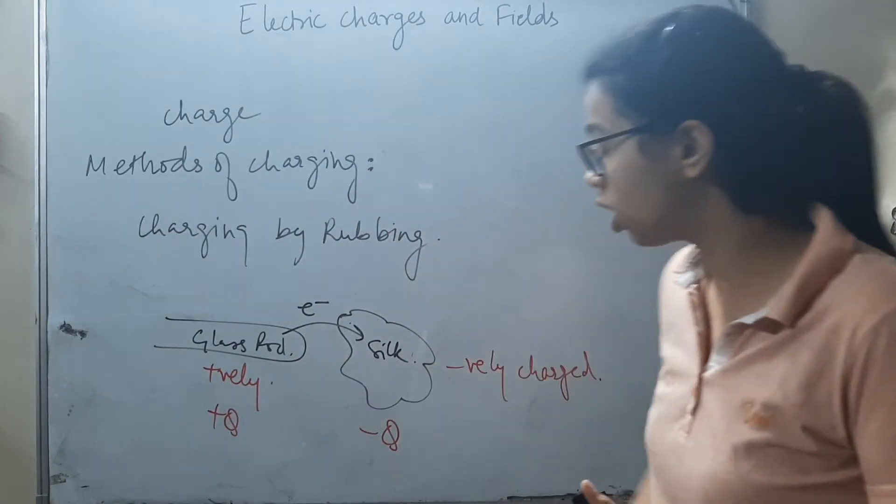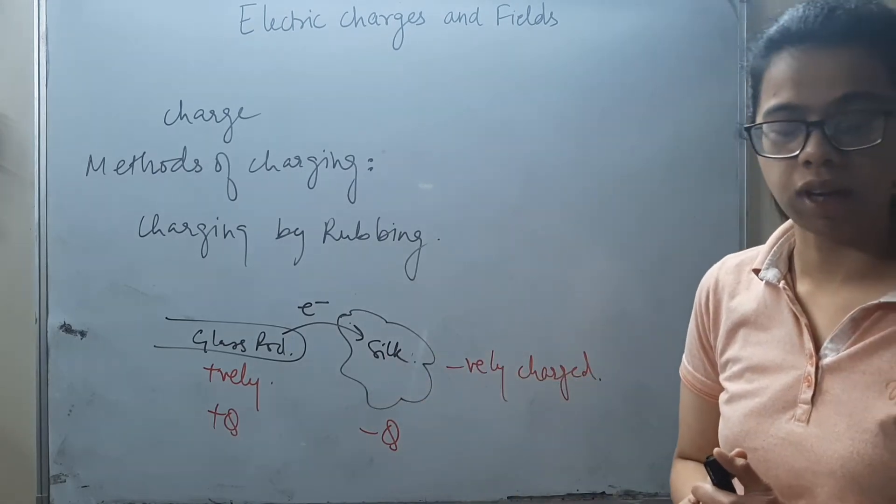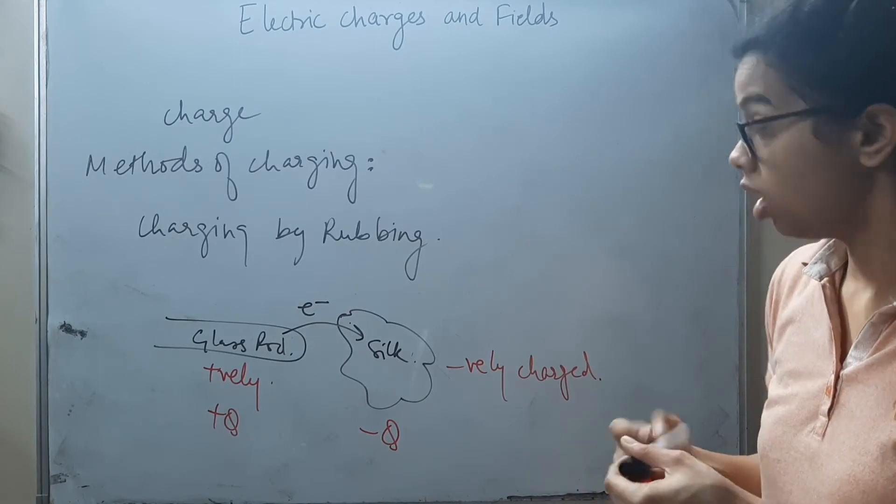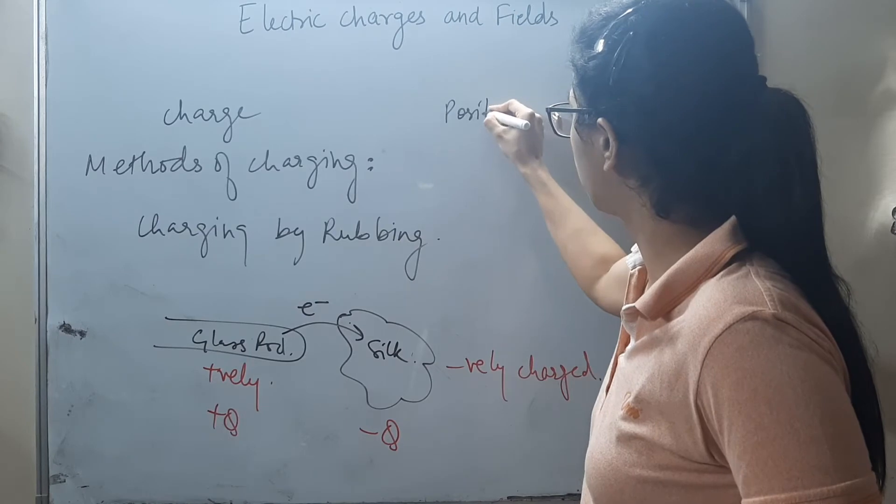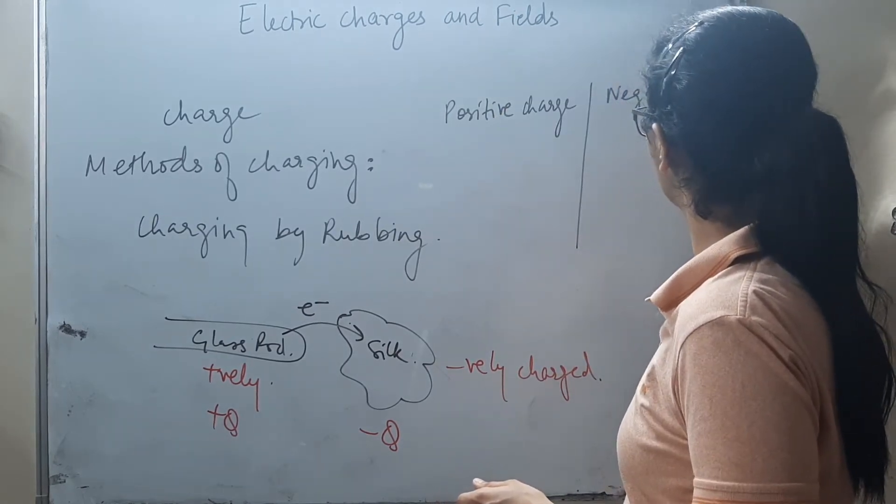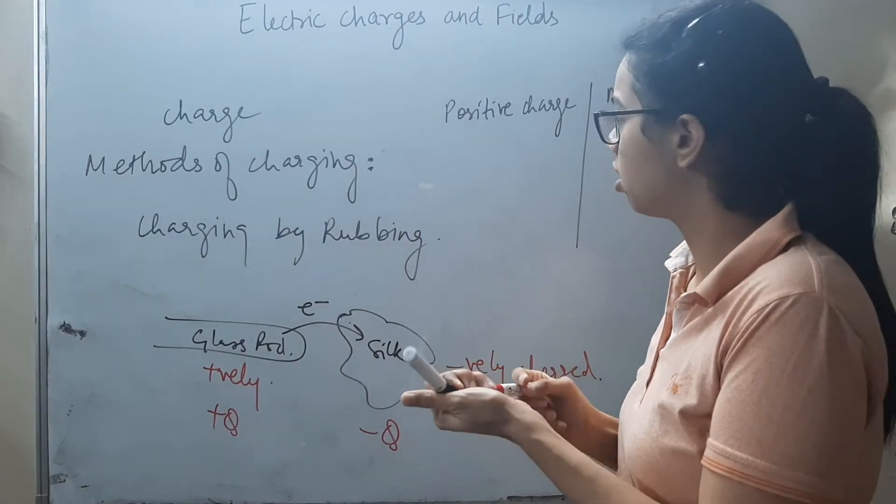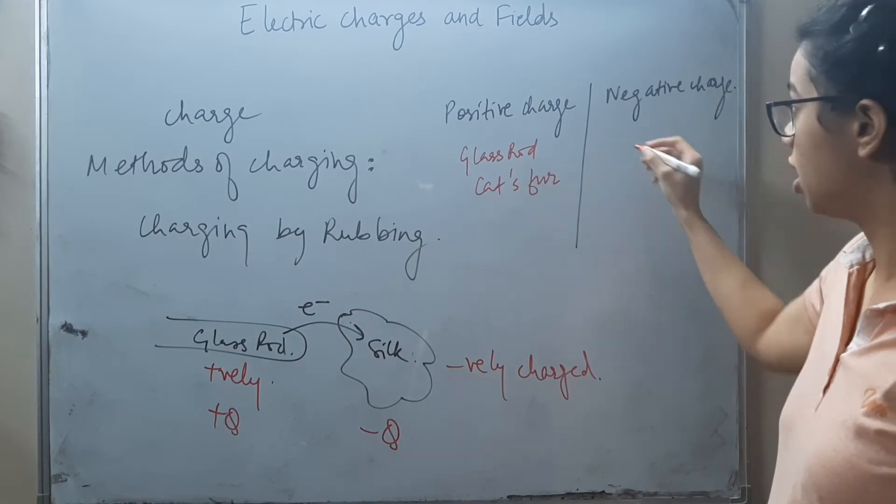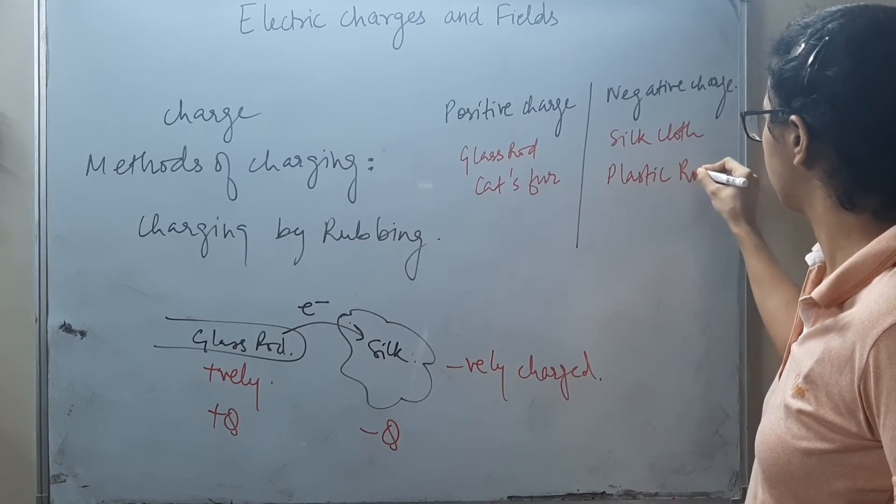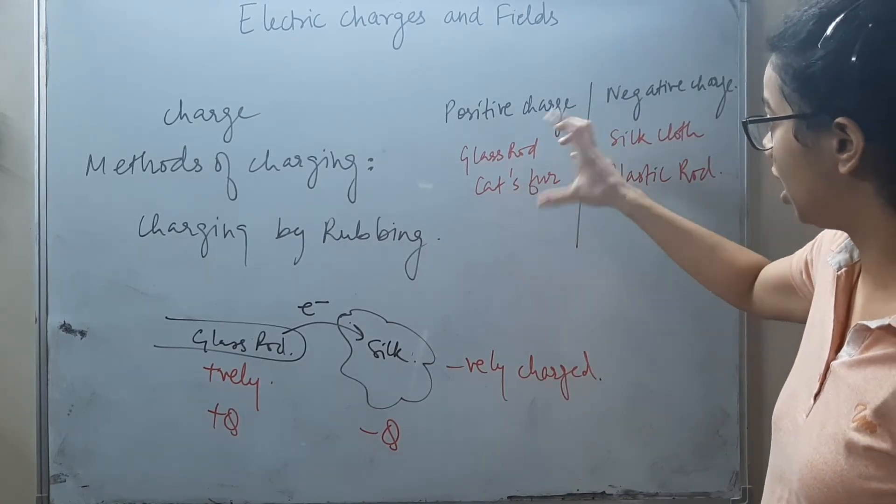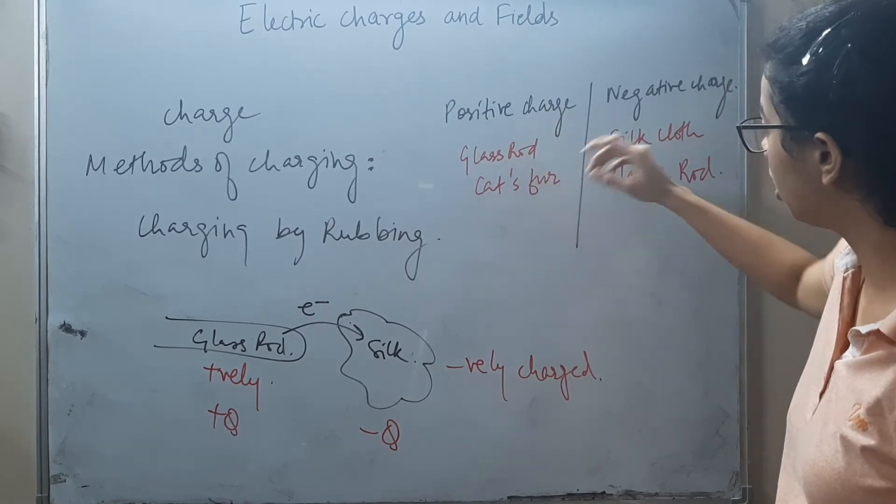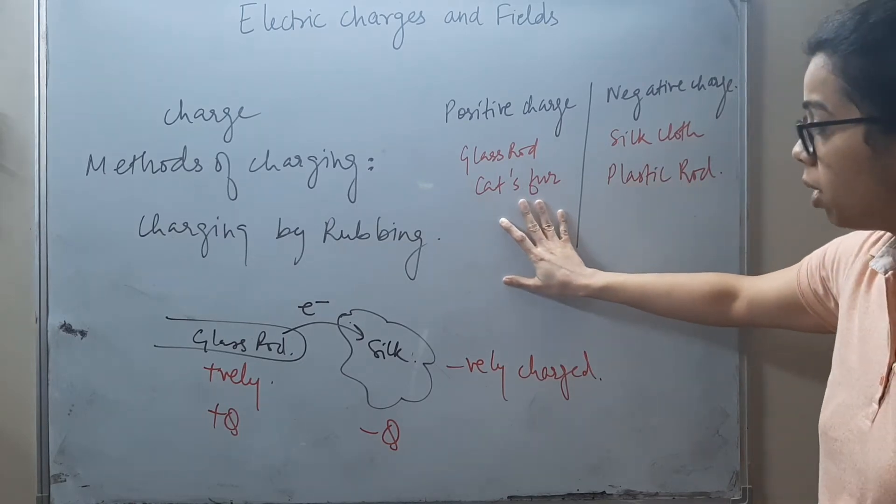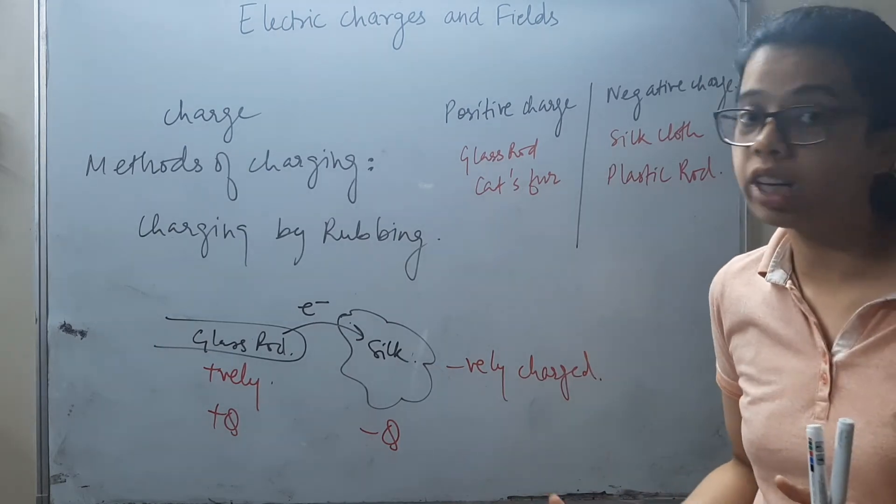Now the question is, does glass rod acquire positive charge or does silk cloth acquire negative charge? The reason is that it depends on what material it is, which material acquires positive charge and which material acquires negative charge. So we have a list. Materials that acquire positive charge include glass rod and cat fur. Materials that acquire negative charge include silk cloth and plastic rod. This depends on the property of the material.